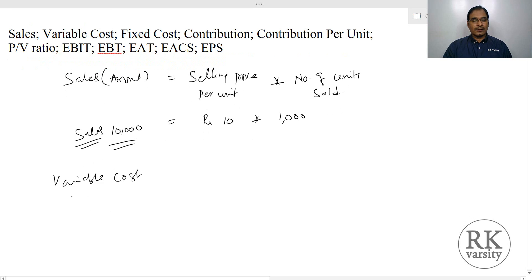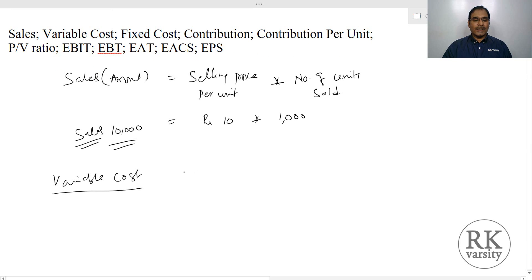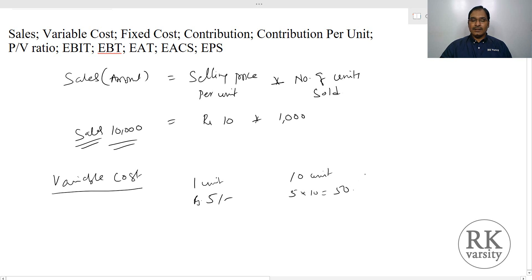Next is the variable cost. Variable costs vary according to the number of units that you produce — they increase linearly with the number of units produced. That means, suppose if you produce one unit and it costs Rs.5, then if you produce 10 units, it will cost you Rs.50. The variable cost has a linearity; it gradually grows as your number of units sold increases.